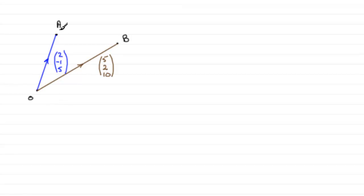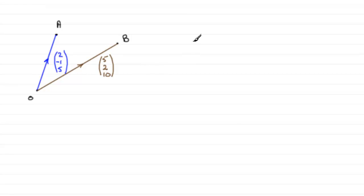A has got position vector 2i minus j plus 5k, and I've written it as a column vector because I generally find it's a lot easier to work with. The position vector of B — in other words O to B — is the vector 5i plus 2j plus 10k.